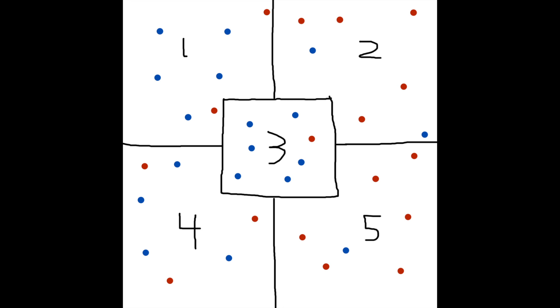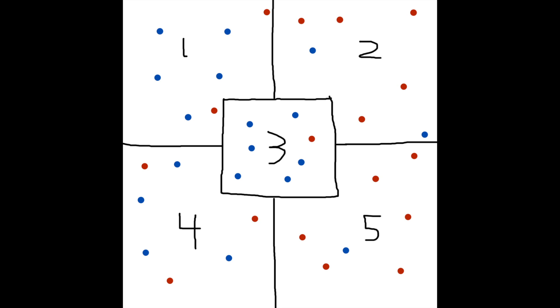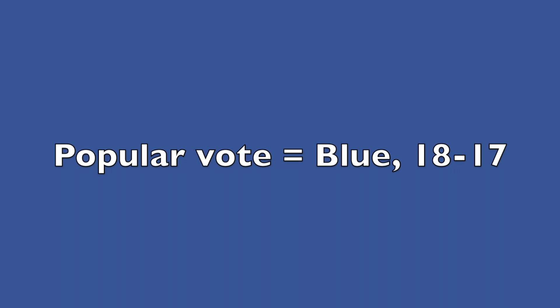As an example, these are 5 districts with 7 voters in each district. Let's go see who won the election. The blue party won 3 districts while the red party won 2. This fairly represents the popular vote which was won by the blue party 18-17.